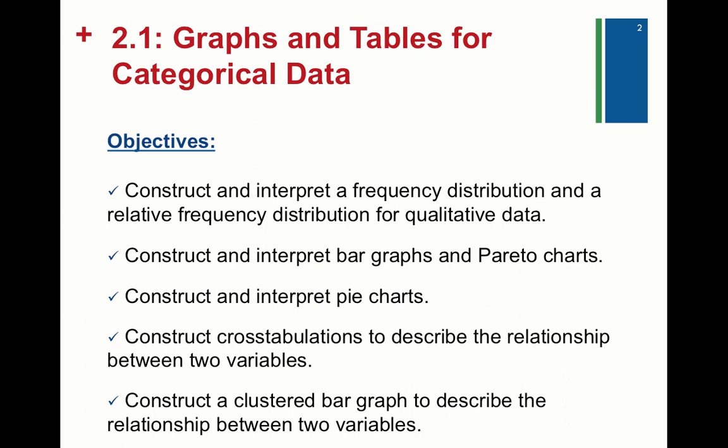From those distributions, we'll be able to construct and interpret bar graphs and Pareto charts. We'll also be able to construct and interpret pie charts, which we've seen before. We'll also do cross-tabulations, which is when you ask a group of people multiple questions, so you have characteristics that you cross. Then we'll look at a clustered bar graph created from those cross-tabulations. Remember, cross-tabulation is just another table, very much like a frequency distribution, but with more than one characteristic.